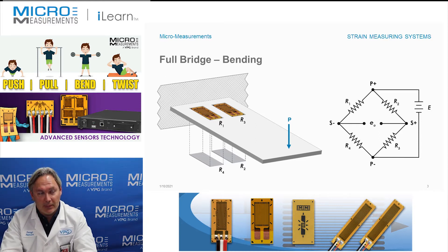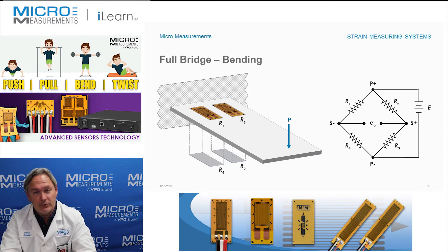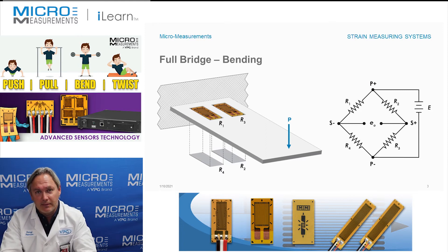When we apply load at the point given as P, these four strain gauges contribute effectively the same magnitude of signal. Let's assume we push hard enough to produce a thousand microstrain — we use a thousand because that's an easy number. So if R1 and R3 see a thousand microstrain of tension, R4 and R2 would see a thousand microstrain of compression.